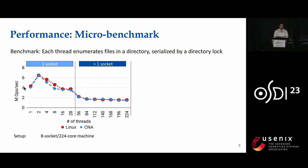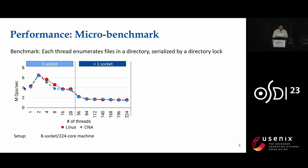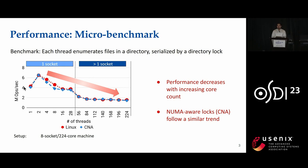As the trend shows, more locks are in use to improve application scalability. The application developer expects linear scalability with increasing core count. However, in practice, it is far from ideal. Let's understand this behavior with a microbenchmark where each thread enumerates files in a directory and contends on the directory lock. The x-axis shows the number of threads and the y-axis shows throughput in billions of operations per second. The graph shows performance decreases with increasing core count, and other locks like CNA follow a similar trend.